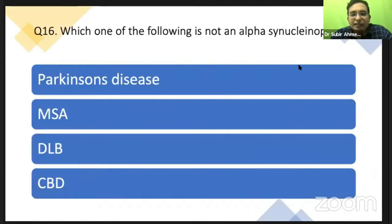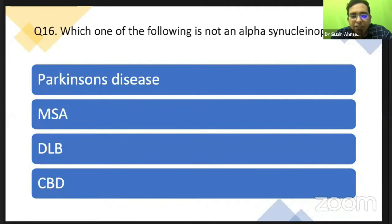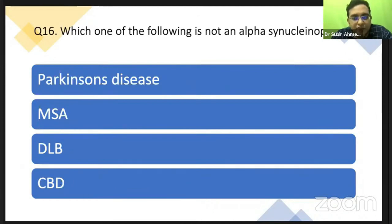Which of the following is not an alpha-synucleinopathy? This is a simple question, but don't miss it. There is also chronic traumatic encephalopathy, which can come in MCQs. Chronic traumatic encephalopathy presents as dementia and is a tauopathy — not an alpha-synucleinopathy. Parkinson's disease, MSA, and DLB are all alpha-synucleinopathies. Don't get confused — chronic traumatic encephalopathy is a tauopathy.